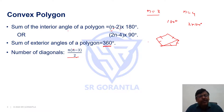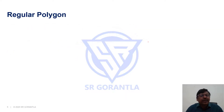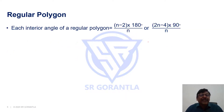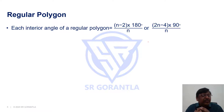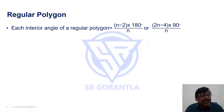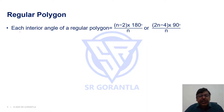Now, what about a regular polygon? A regular polygon means all angles are equal — in fact all sides are also equal. In a regular polygon, all angles and sides are equal.